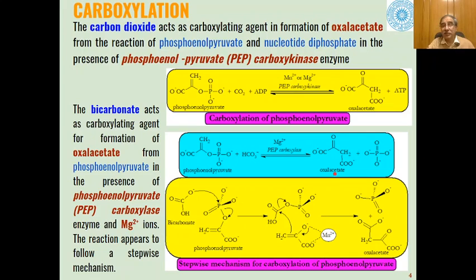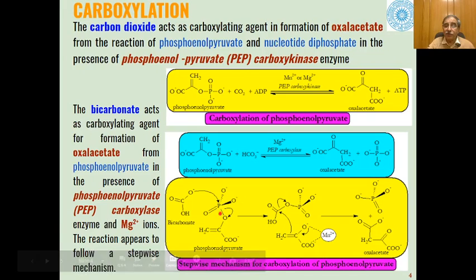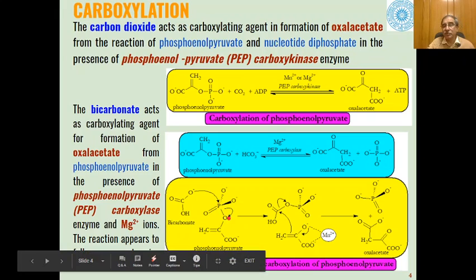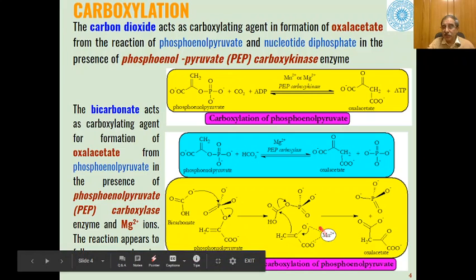The mechanism for carboxylation using PEP carboxylase enzyme is that bicarbonate acts as a nucleophile and attacks the electrophilic phosphorous group of phosphoenol pyruvate, with breaking of this phosphorous-oxygen bond quickly. Bicarbonate gets attached to the phosphoenol and we get this type of intermediate, where one oxygen carries a negative charge. These negative charges are neutralized by reaction with the cofactors, either manganese or magnesium ions.